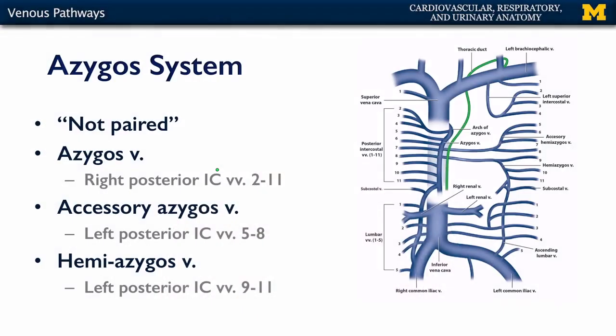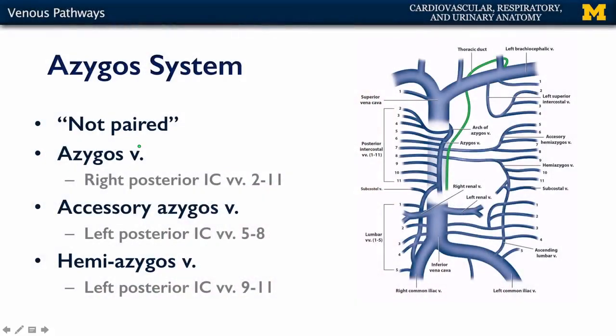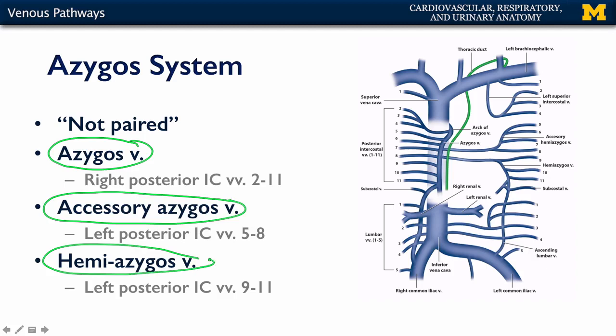With respect to the torso, the pattern of drainage is very complex, and we refer to this rather asymmetrical pattern of drainage as the azygous system. The azygous — or azygos, meaning 'not paired' — system consists of three major components: the azygous vein, the accessory azygous vein, and the hemi-azygous vein.